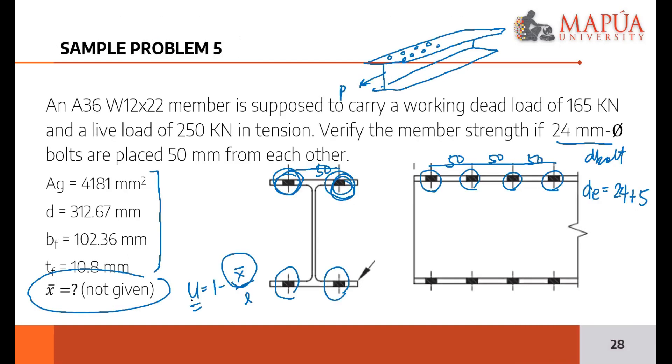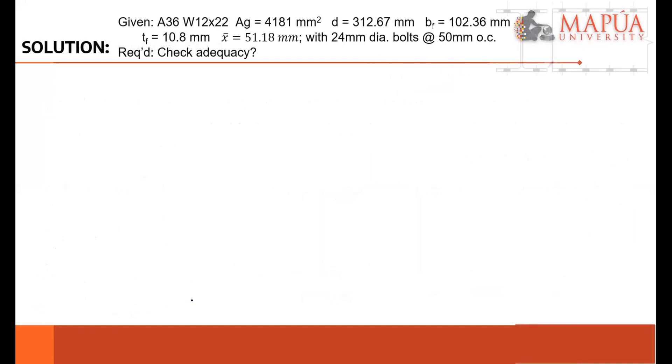As you can see from the given, where is the wide flange connected? At the top and bottom flanges. This means there are cover plates - steel plates on top and at the bottom. The connecting members are at the top and bottom of the flanges. Nothing is connected to the web. So there will be shear lag, and we need to solve for capital U later.